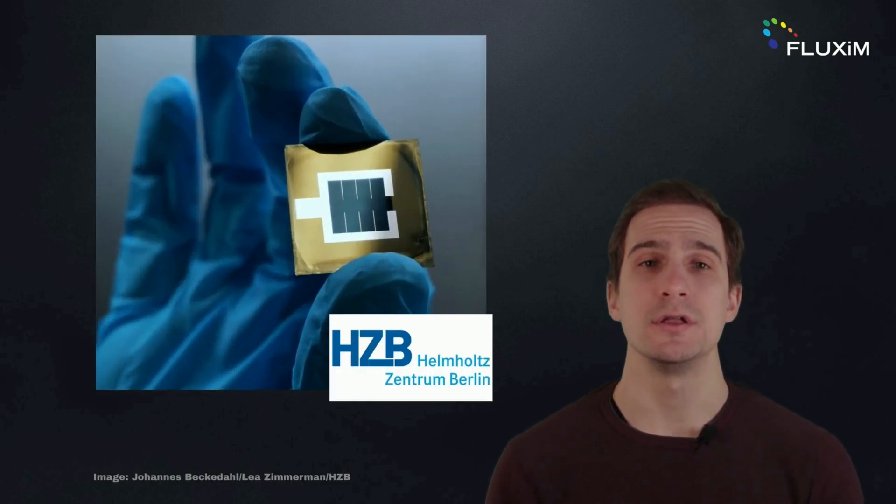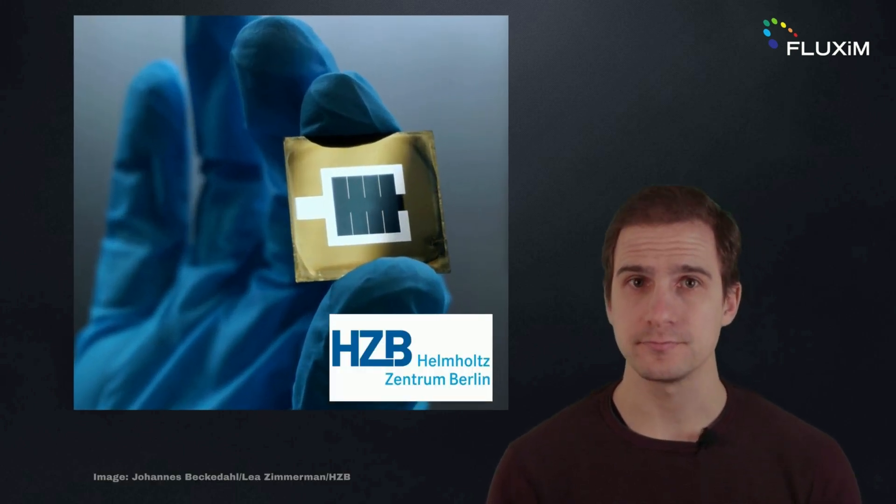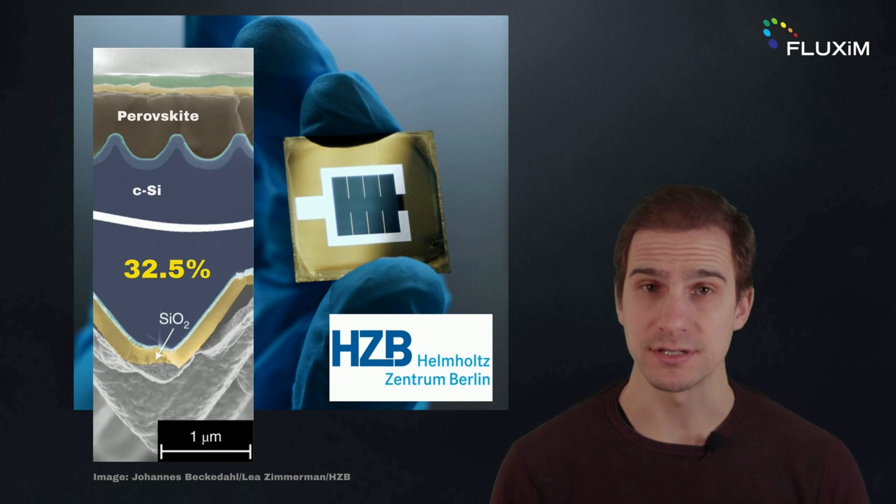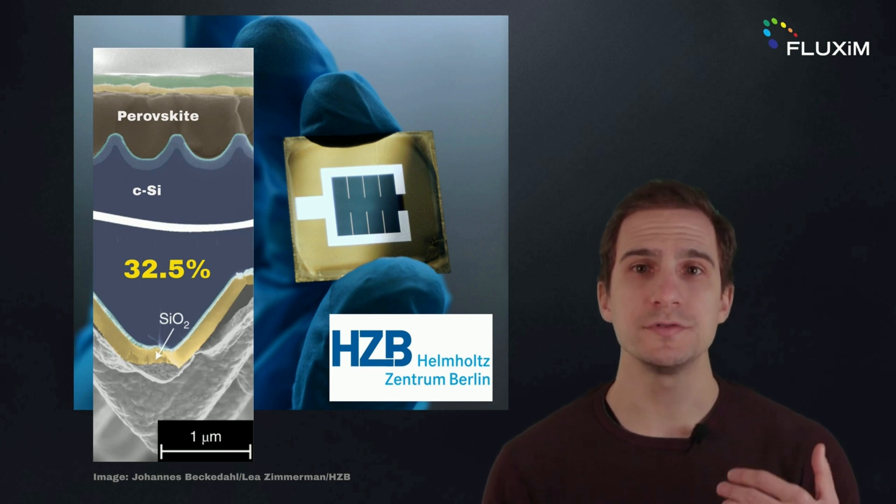These two approaches led to the highest efficiency records for silicon-perovskite tandem solar cells during 2022. The record efficiency of 32.5% was obtained for a planarized tandem solar cell with a nanotexture between the two subcells, which improves light management and the deposition quality of the perovskite absorber.